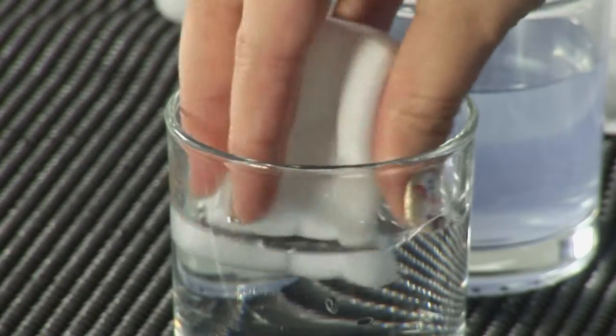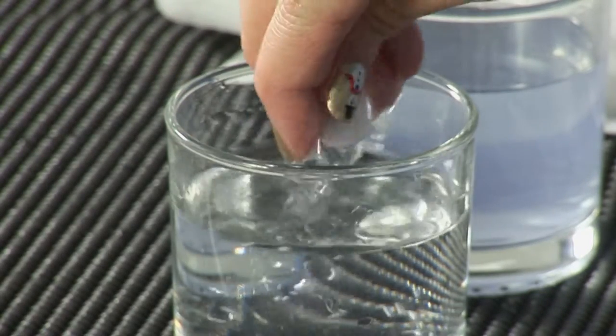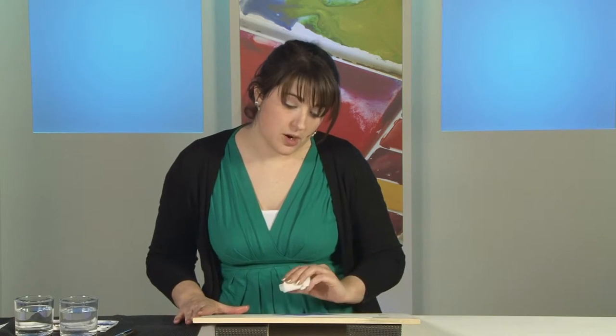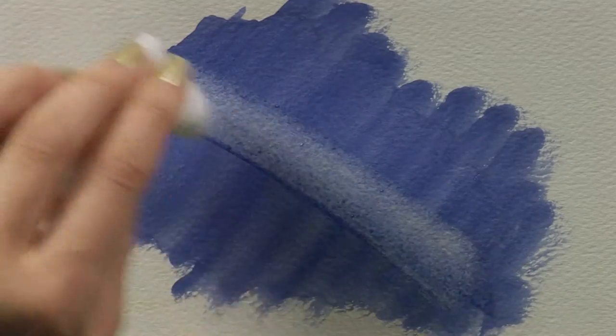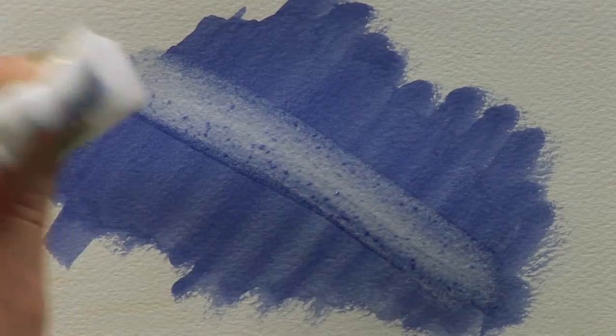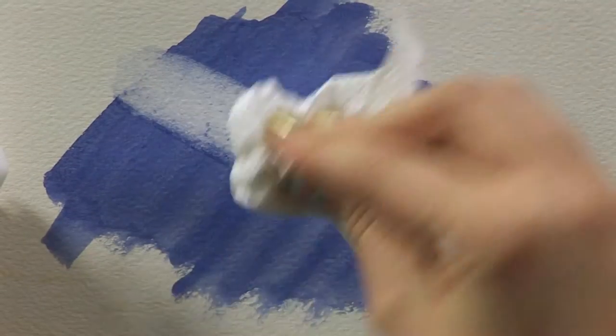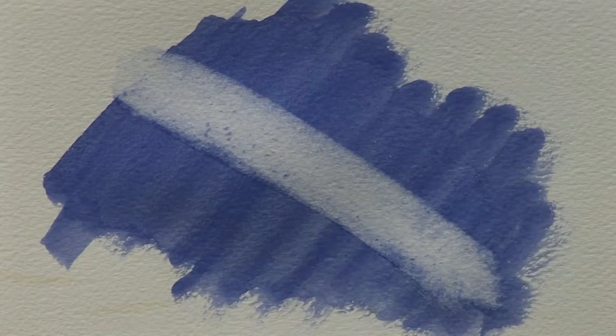I start by wetting my sponge and then wring it out. Your sponge doesn't need to be too wet. Then you find whatever mark you've got on the page that you want to erase and rub it gently across the paper. Then use some tissue to blot. You'll see that the pigment is erased completely from the page.